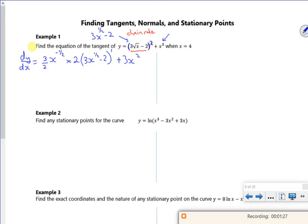Now then, it's always nice to tidy up a little bit. And if you look, the 2's cancel. So our dy by dx is 3x to the minus a half, 3x to the half minus 2 plus 3x squared.